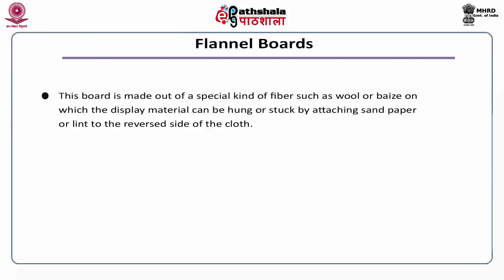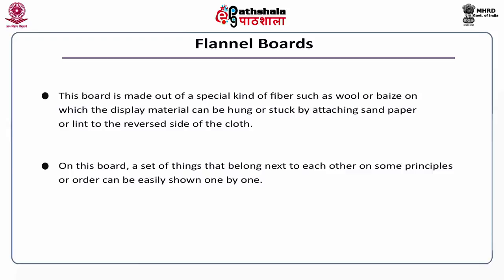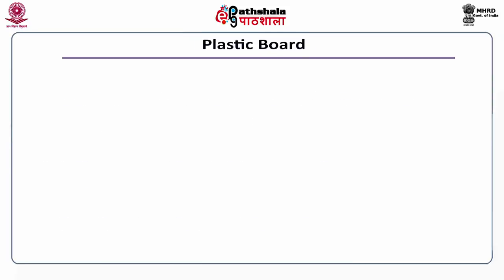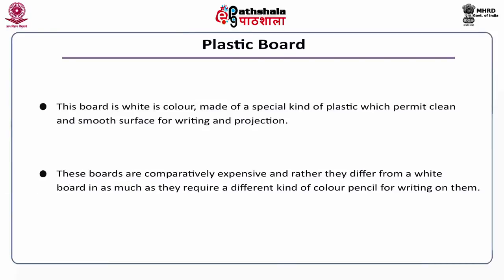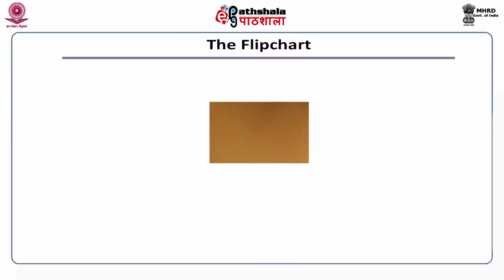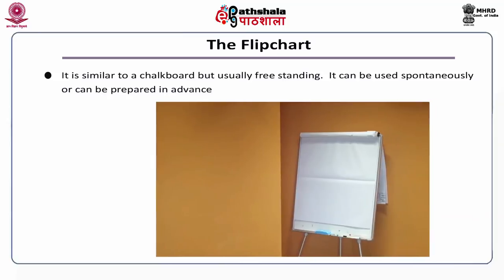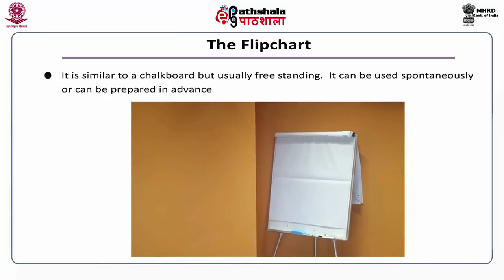Flannel boards. This board is made out of a special kind of fiber such as wool, on which display materials can be hung or stuck by attaching sandpaper or lint to the reverse side of the cloth. A set of things that belong next to each other on some principle or order can be easily shown one by one. This could also be used for a poster demonstration. Plastic board. This board is white in color and made of a special kind of plastic which permits a clean and smooth surface for writing and projection. These boards are comparatively expensive and differ from a whiteboard in that they require a different kind of color pencil for writing on them. The flip chart is similar to a chalkboard but usually free standing. It can be used spontaneously or can be prepared in advance.